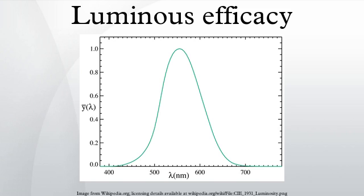The luminous efficacy of radiation describes how well a given quantity of electromagnetic radiation from a source produces visible light, the ratio of luminous flux to radiant flux.